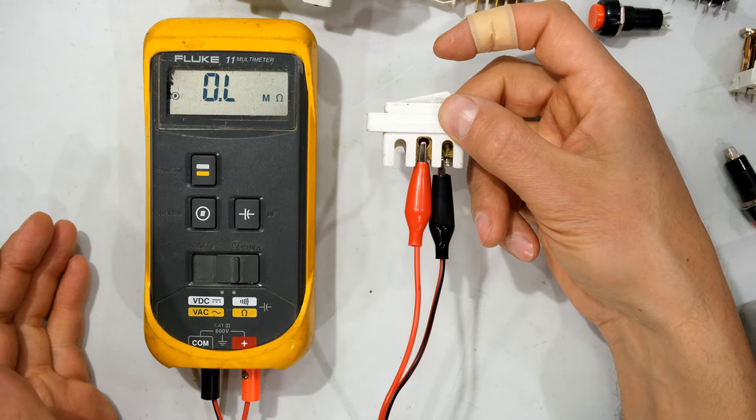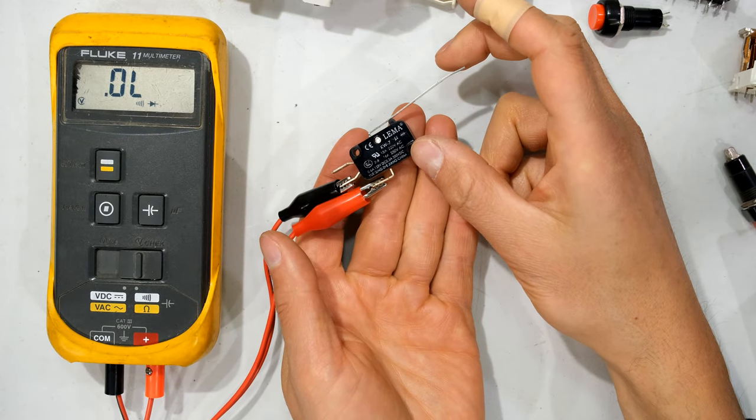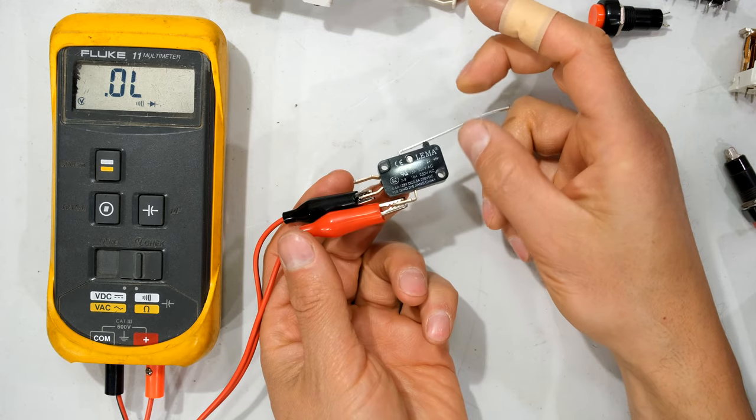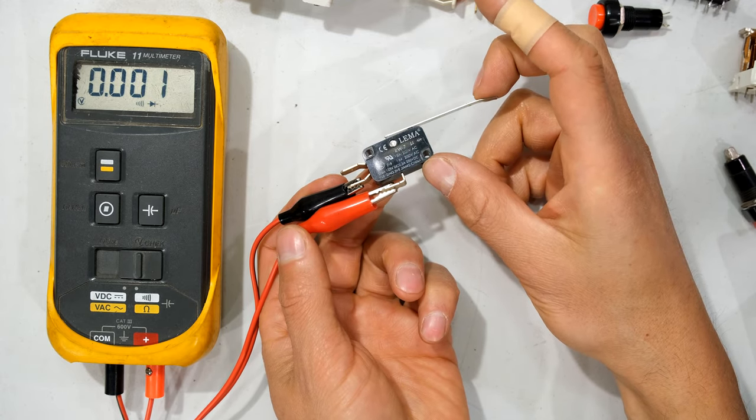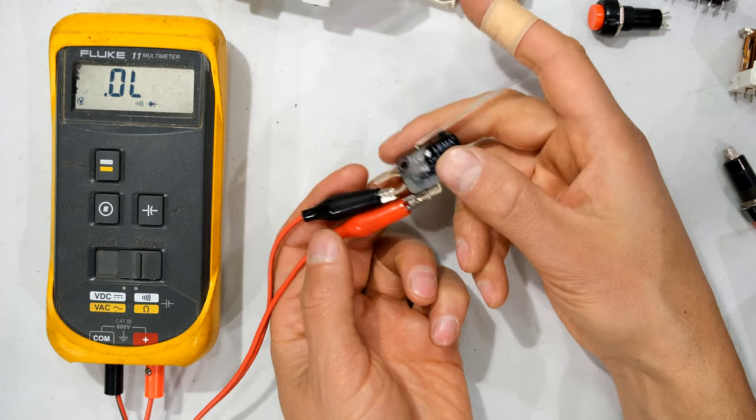So this is what we call a latching switch. Now not all switches are latching. For example, over here I've got what we call a limit switch, and only when I depress this leaf spring do we see it's a short circuit. When I release this, you can hear it is now an open circuit.